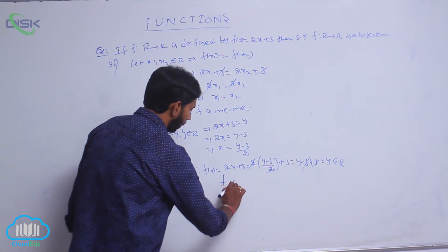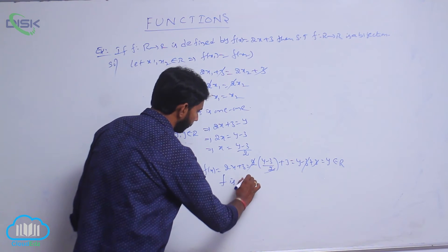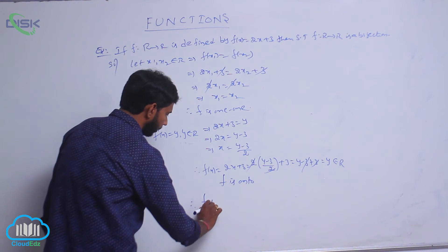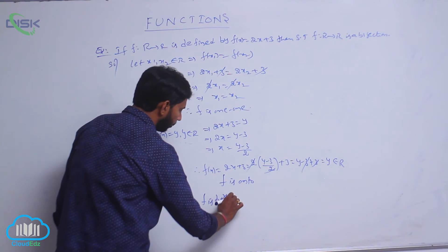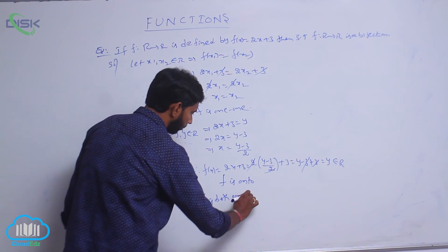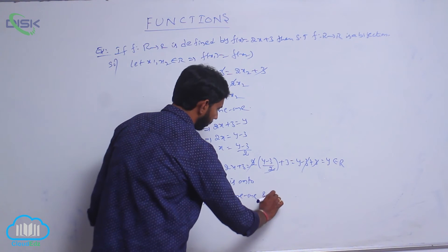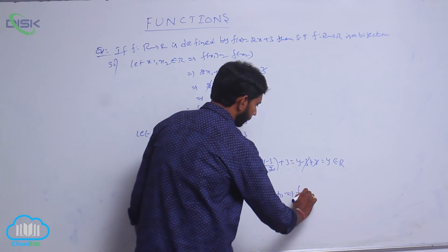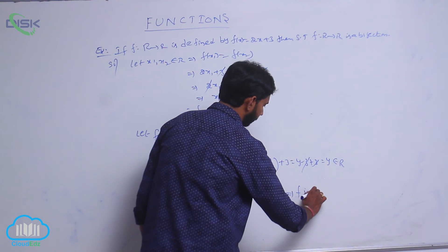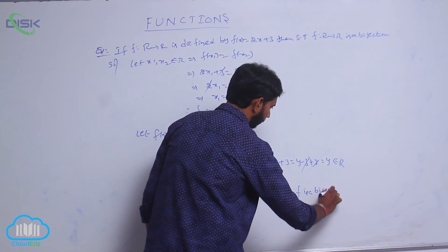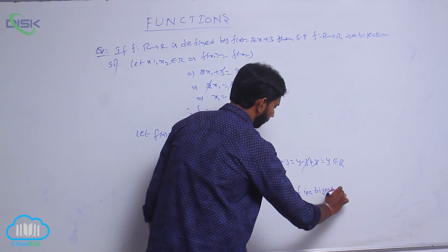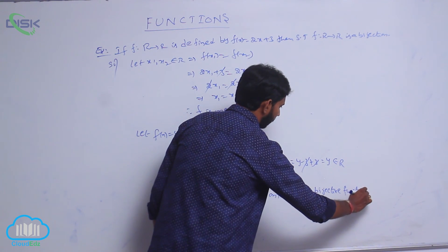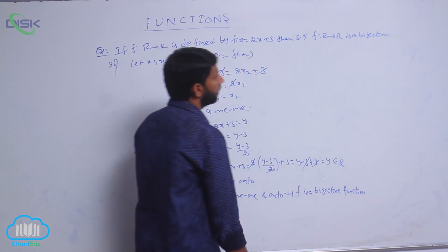Therefore, f is onto. Therefore, f is both one-to-one and onto, that implies f is a bijective function.